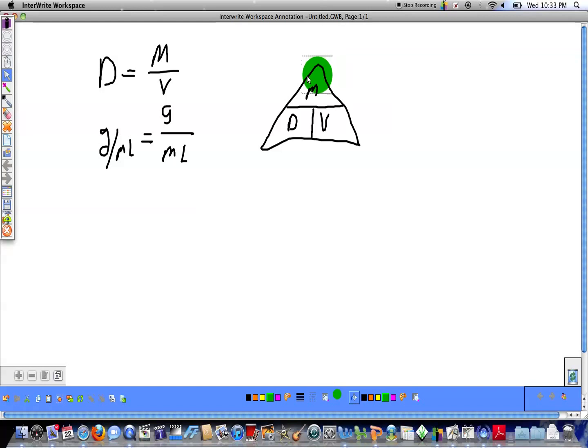If I want to solve for the mass, then I cover up the mass and the formula I get is that the mass is equal to the density times the volume. So, I'm going to write that down. Mass is equal to density times the volume.